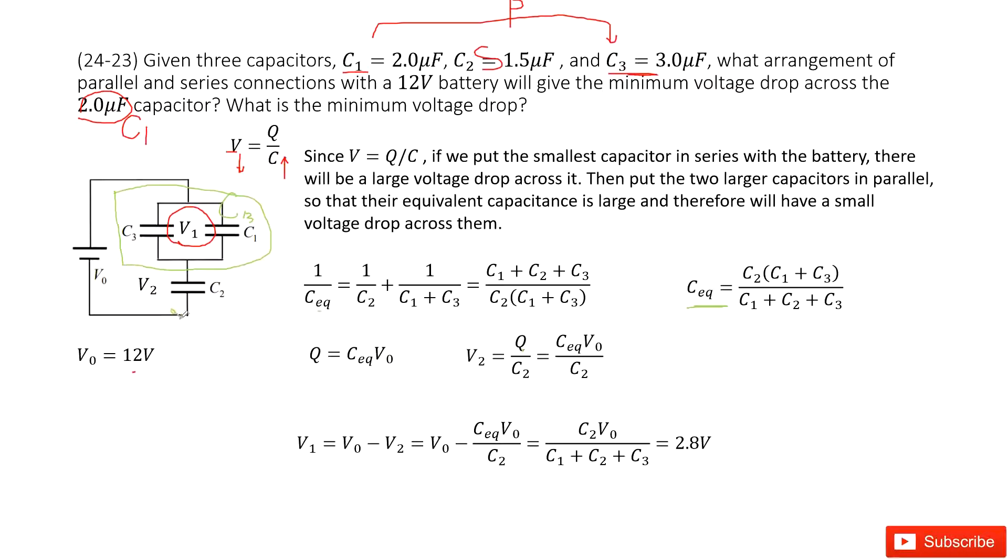The charge Q can be written as the equivalent capacitance times V0. V0 is the source. Because the charge in this main stream could come to C2 equals the charge at the main branches. So Q equals equivalent capacitance times V0.